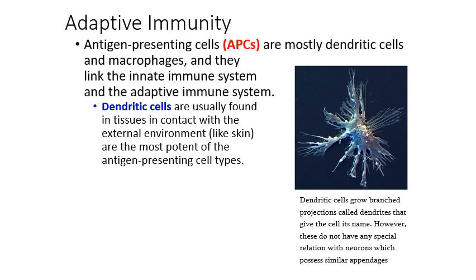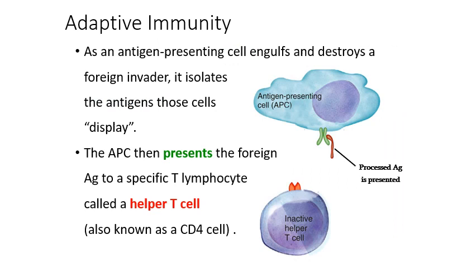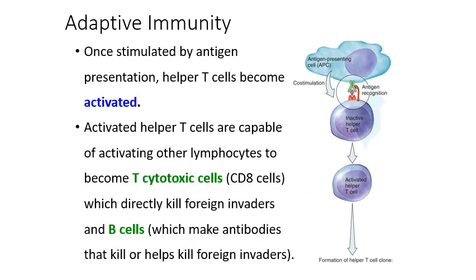Dendritic cells are a type of phagocytic cell found a lot in tissues that have contact with the external environment, like skin or mucous membranes. They're capable of phagocytizing pathogens that try to enter the body, then they do the same thing as a macrophage: ingest the pathogen, break it down, and present it on the surface to a helper T cell. This antigen presentation is incredibly important for initiating your third line of defense, or adaptive immunity.